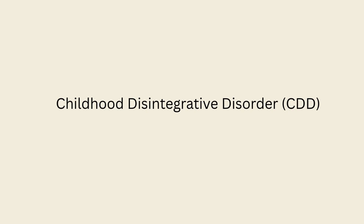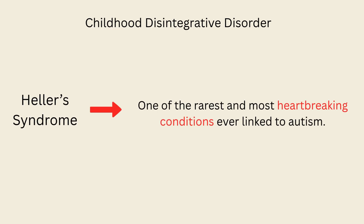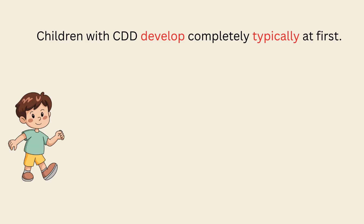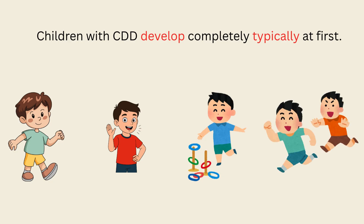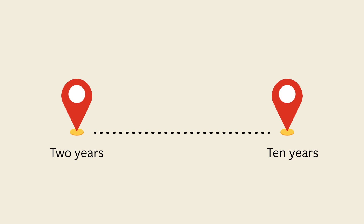Childhood Disintegrative Disorder, or CDD — sometimes called Heller's Syndrome — is one of the rarest and most heartbreaking conditions ever linked to autism. Children with CDD develop completely typically at first: they learn to walk, talk, play, and interact just like their peers. Parents celebrate milestones and often believe their child is thriving. Then, sometime between the ages of 2 and 10 — most often around ages 3 or 4 — everything changes.